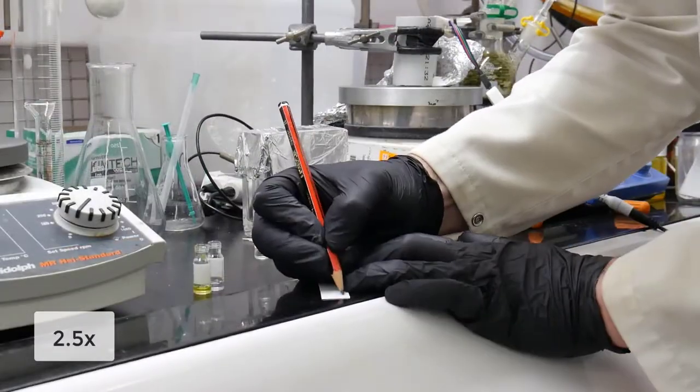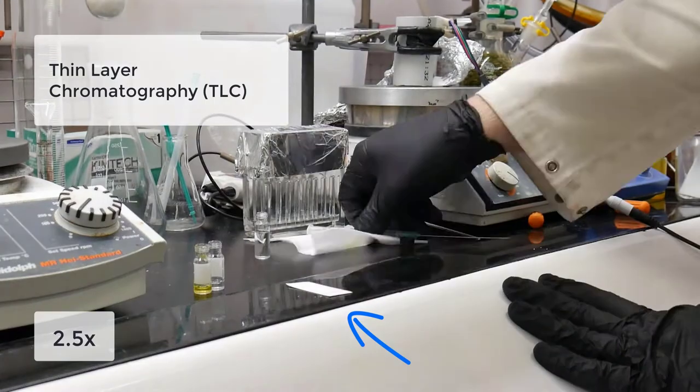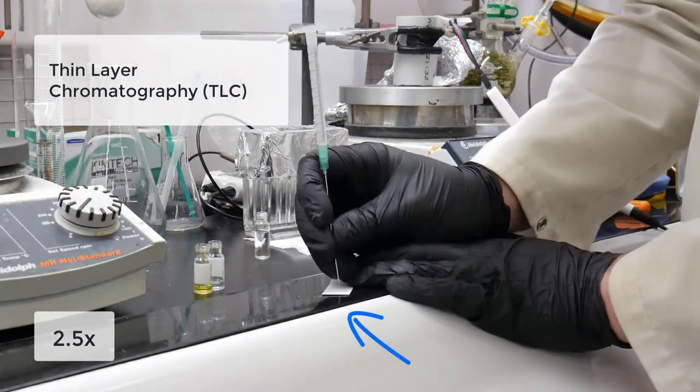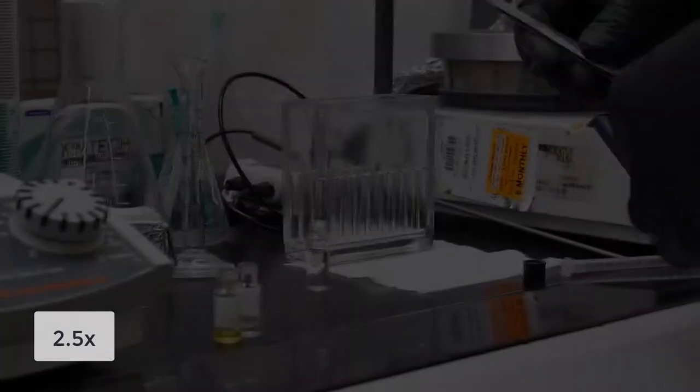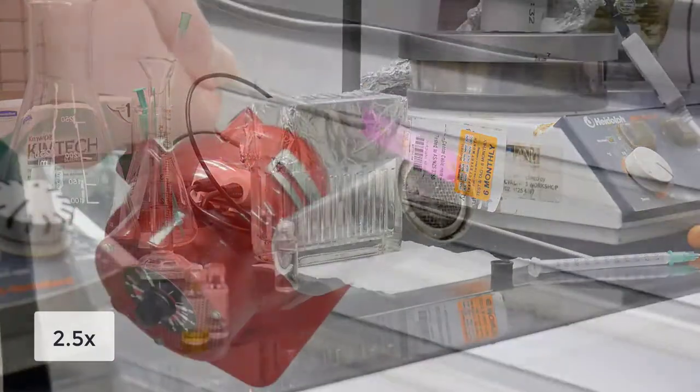Firstly we have to run a thin layer chromatography plate, which lets us know exactly how much our compound is going to stick to the stationary phase.